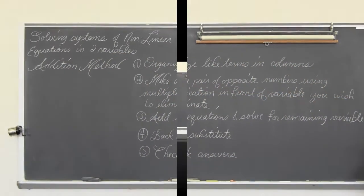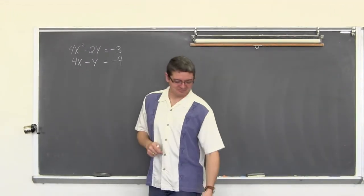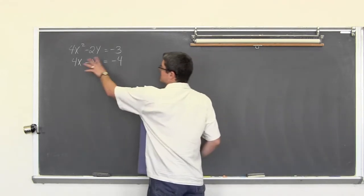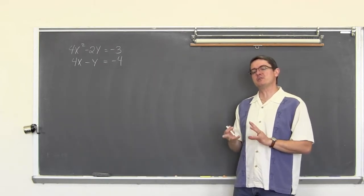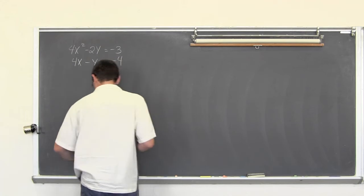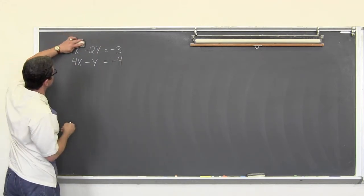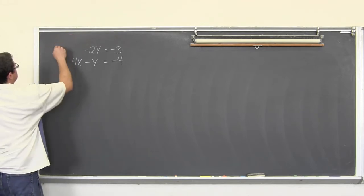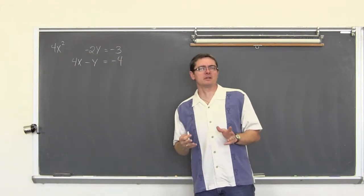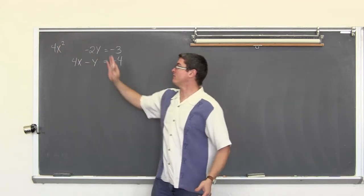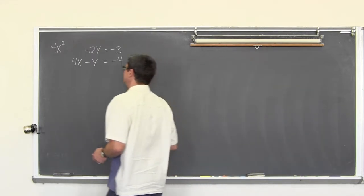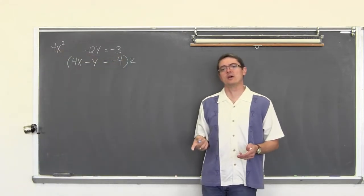The first example might look very similar — it is the same first example from my last video about the substitution method. This is also going to work for the addition method because we can create an opposite pair of numbers, add them, and get an equation with only one variable. I am going to change the first equation a little bit so the terms are all stacked up nicely. Not only your x's and y's are in columns, but the degrees are also in columns, because 4x squared is not a like term to 4x. So now we are going to use multiplication.